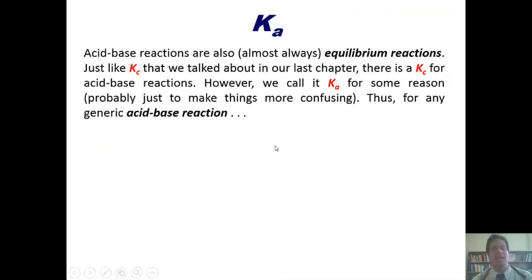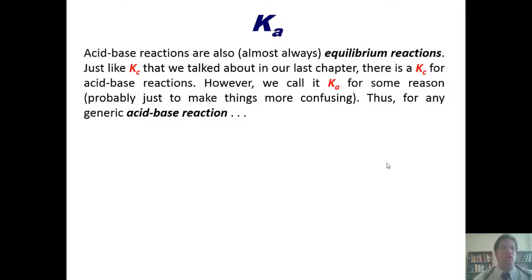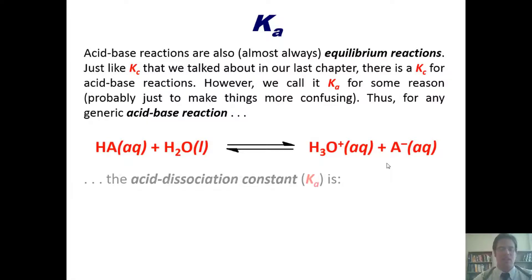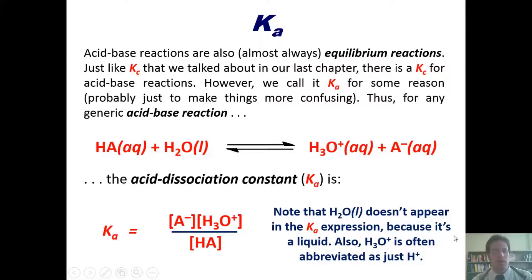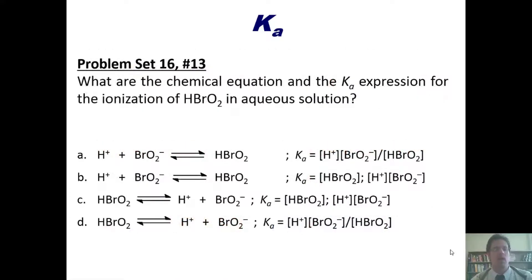Now we turn to Ka, the acid-base equilibrium constant. Acid-base reactions are almost always equilibrium reactions. Just like Kc from a previous chapter, there is an equilibrium constant for acid-base reactions — we call it Ka. For any generic acid-base reaction, the acid dissociation constant Ka is expressed as the concentrations of products over reactants. Please note that water doesn't appear in the Ka expression because it's a liquid — we also omit solids. H3O+ hydronium is sometimes abbreviated as H+. I invite you to try a practice multiple choice question on the ionization of HBrO2 in aqueous solution.